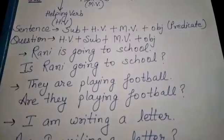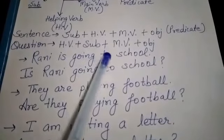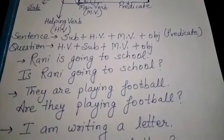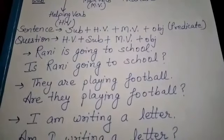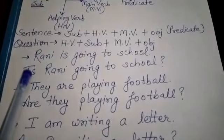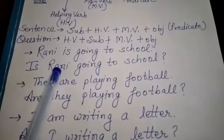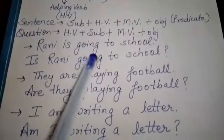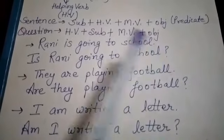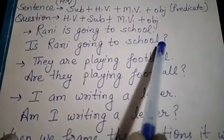अब इसके लिए हम कुछ examples ले लेते हैं. 'Rani is going to school.' This is a statement. To convert it into a question, first we will write 'is' — that is the helping verb — then subject 'Rani,' then main verb 'going,' and the remaining portion 'to school' is the object. So the question becomes: 'Is Rani going to school?'